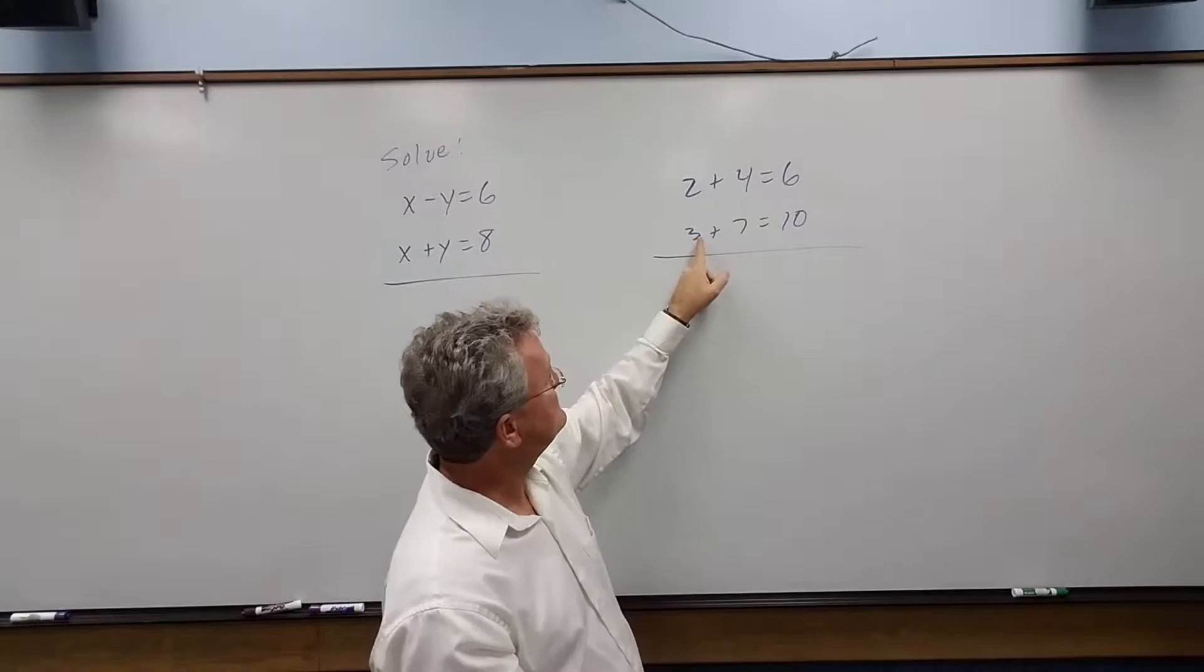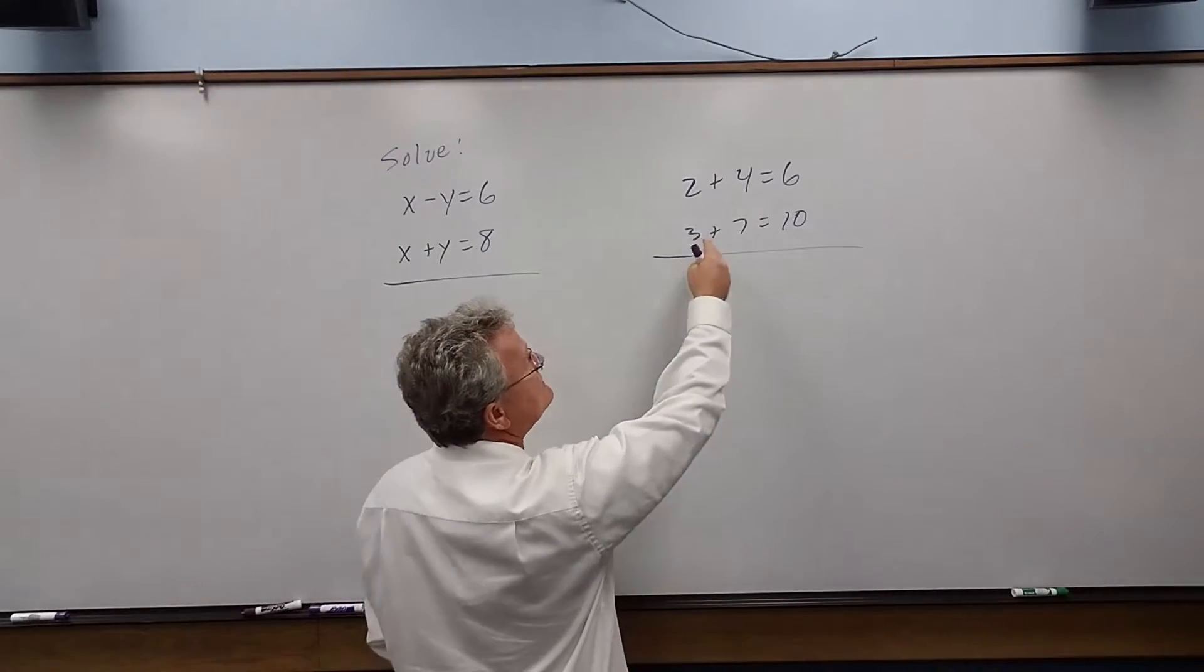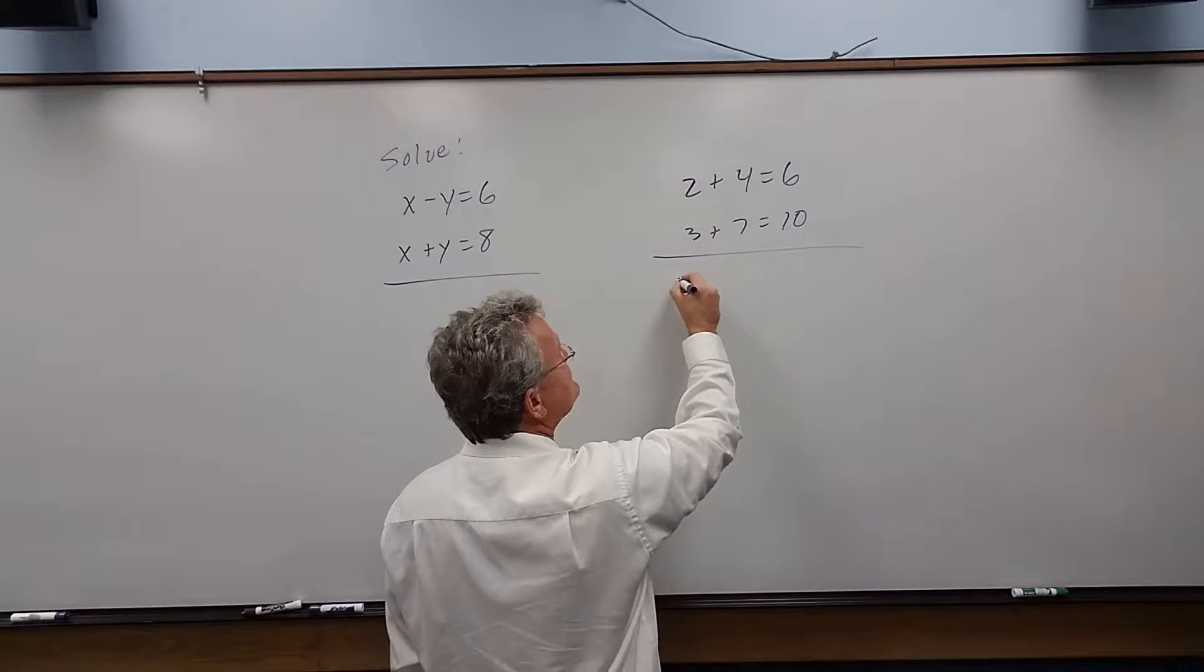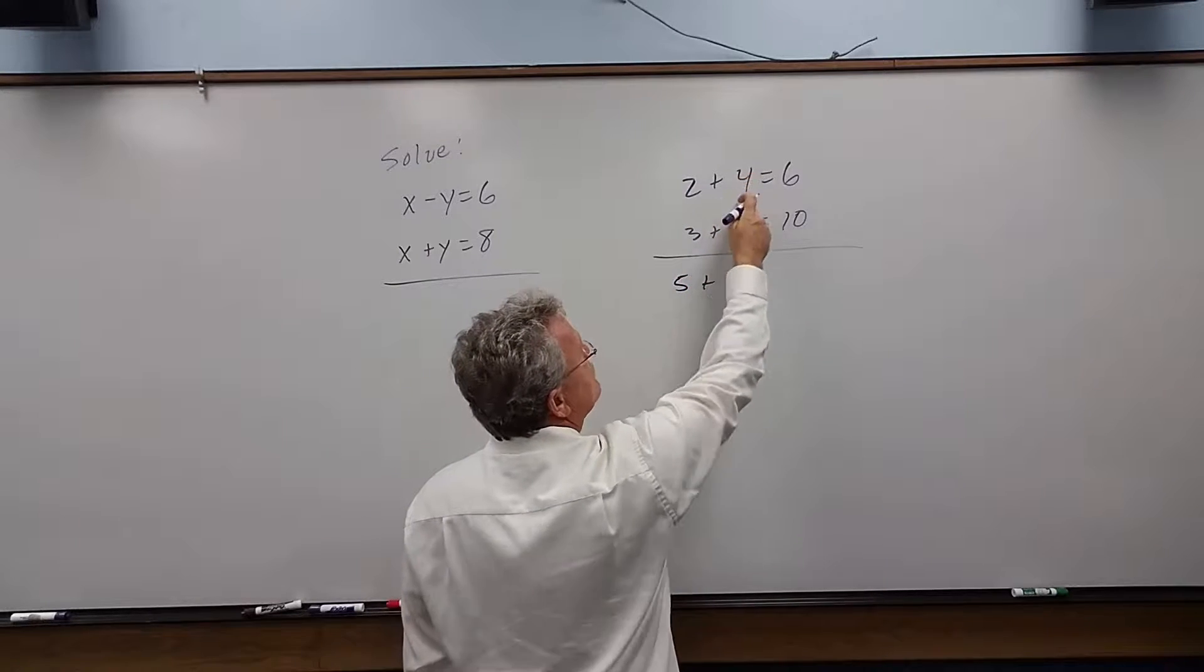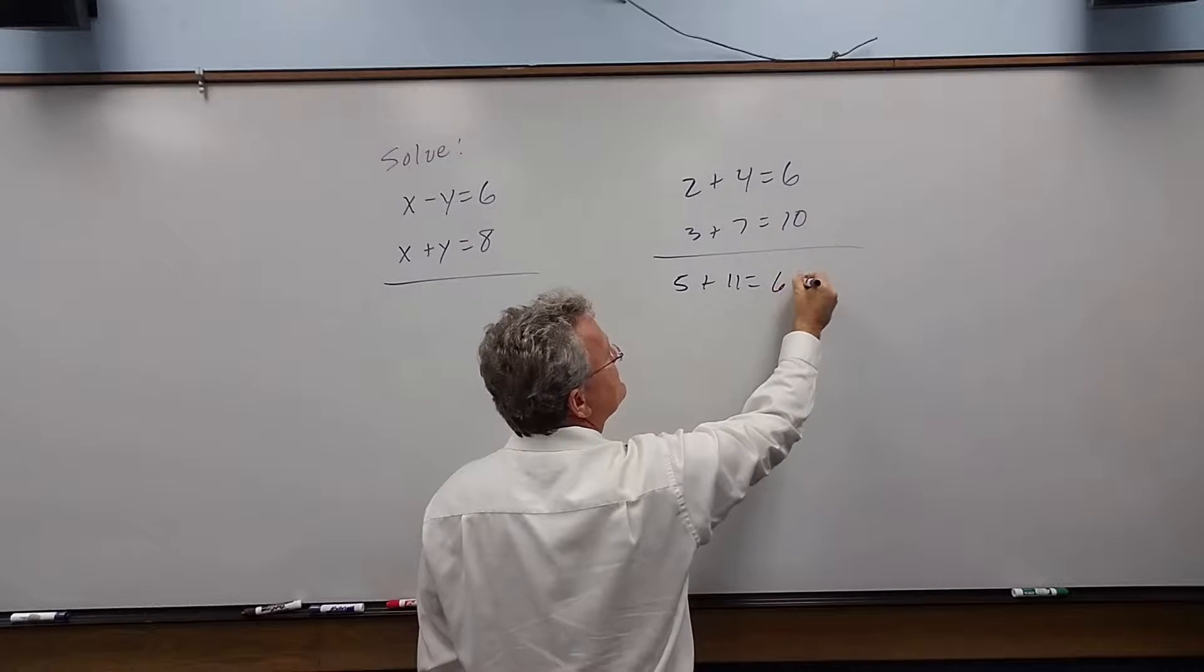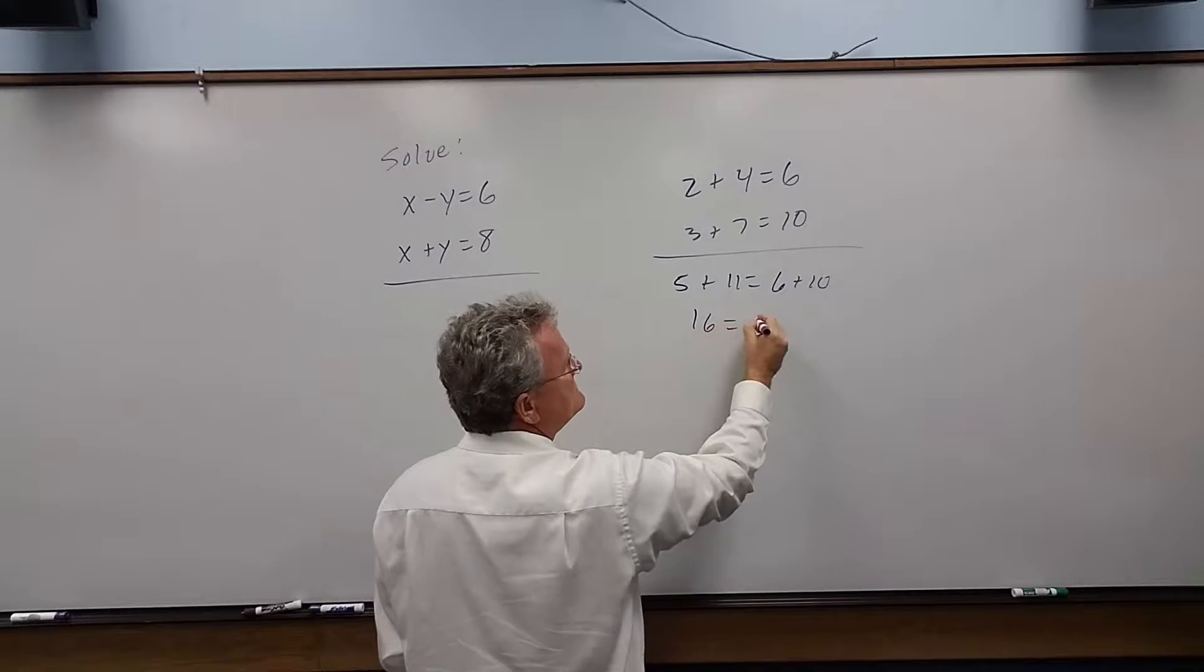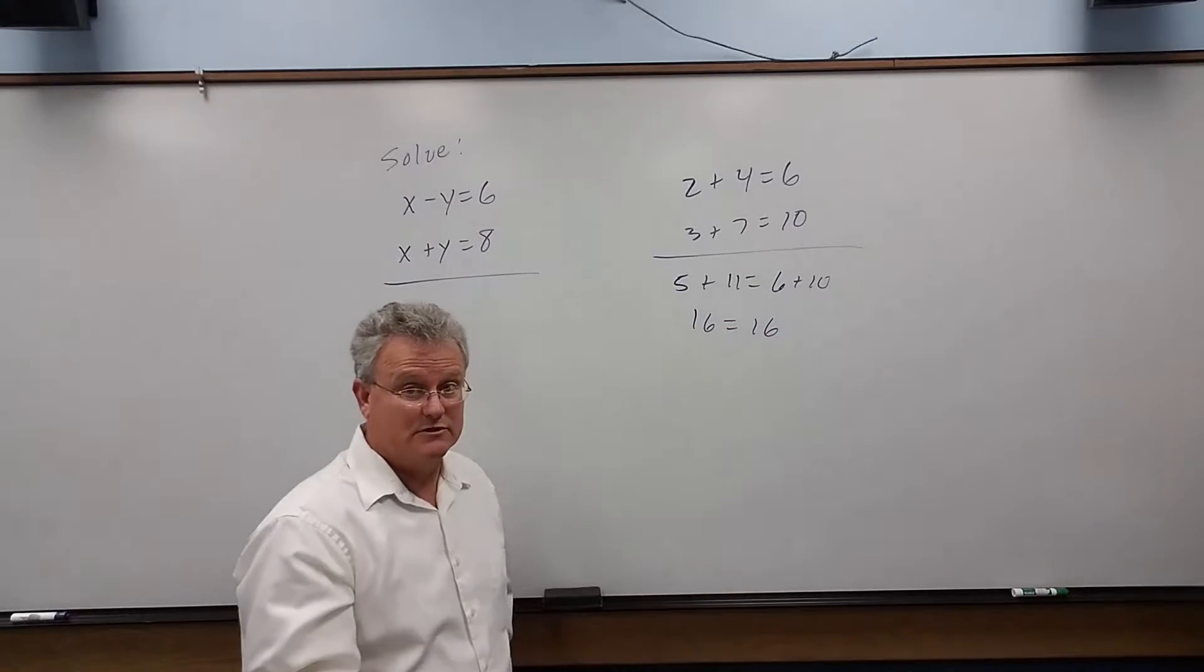2 plus 4 we know is 6 and 3 plus 7 is 10. If we add these, 2 plus 3 is 5, 4 plus 7 is 11, and over here we get 6 plus 10. Adding these, this is 16 is equal to 16, which is what we would expect.